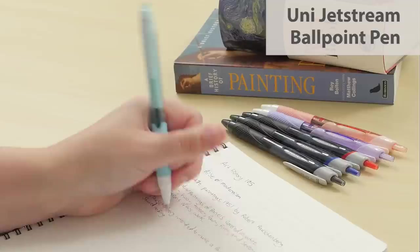The Uni Jetstream ballpoint pen has specially formulated low viscosity ink that writes smoothly with little pressure and dries in three seconds. If you like cushy grips, check out the ultra comfy alpha gel Uni Jetstream pen.